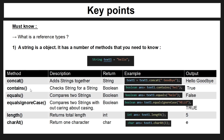The contains method allows us to check whether the string in the brackets is within the variable. For example, "HEL" is contained within the text1 variable and so it returns a boolean true. If it doesn't contain it, it returns false.